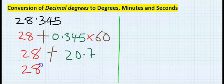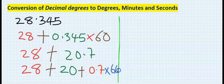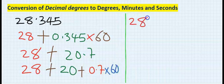Next step, I will leave this 28. And this 20, I will remove 0.7 from this 20. I will multiply the remaining 0.7, multiply that by 60 again.